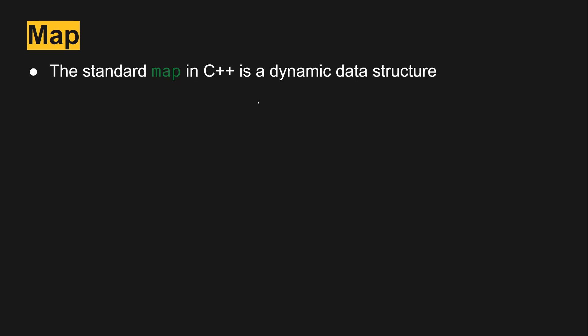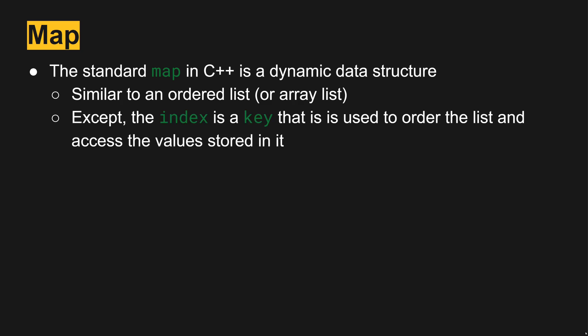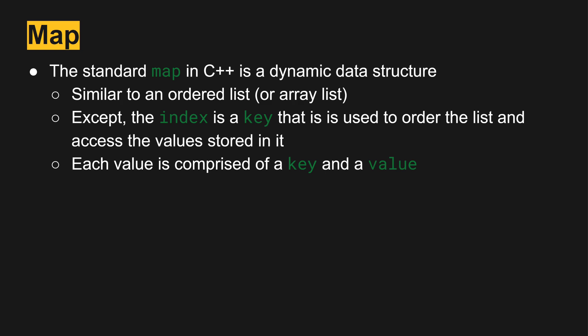The standard map in C++ is another dynamic data structure. It is similar to an ordered list or an array list, except the index is not a number — the index is definable by the developer. It uses a key and value construct that is also used to order the list and access values in it very quickly. Each value is comprised of a key and a value, and each key in a map must be unique.